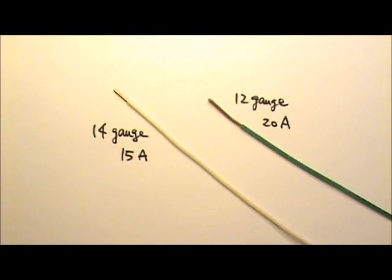Wires are rated by the maximum current they can handle safely. For example, this 14 gauge wire is rated for 15 amps of current. This thicker 12 gauge wire is rated for 20 amps.